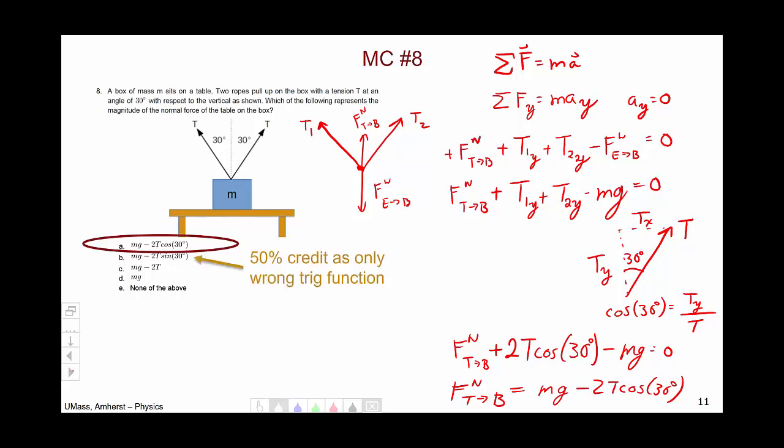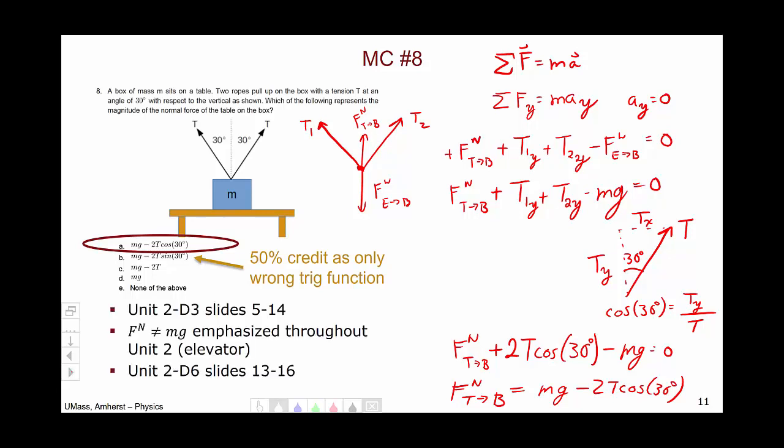I'm going to give 50% credit for choice B, as the only mistake made was using the wrong trig function. This was discussed in unit 2, day 3, slides 5 through 14. The concept of the normal force not being equal to mg was emphasized throughout unit 2, particularly in the elevator problems. Unit 2, day 6, slides 13 through 16 were also similar, involving a rope and normal force.